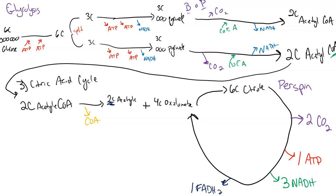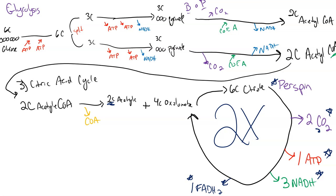Remember, these two carbons are accounted for in the two carbon dioxides. Keep in mind this cycle happens two times, so these are per-spin values. Per molecule of glucose, you need to multiply all values by two, because the cycle happens for each acetyl-CoA and we end up with two molecules of acetyl-CoA. So per glucose: four CO2, two ATP, six NADH, and two FADH2 from this cycle.